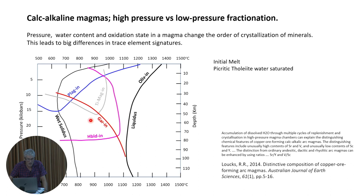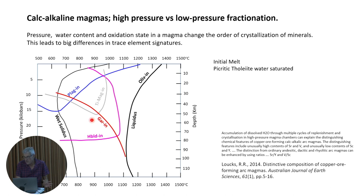Magmas sitting in mid-crustal space are going to fractionate plagioclase and magnetite and go off on a particular liquid line of descent. Things that sit deeper will fractionate hornblende and most likely titanite, and they will have completely different evolutionary paths. It's really easy to plot this stuff in any bivariate plot and see what kind of magma you've got, where it's come from, and how it's likely to fractionate.